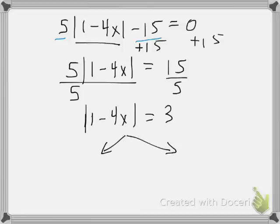It means we write two equations. And I need to solve 1 minus 4x equals 3, the one that I see pretty much. And the other one is 1 minus 4x equals negative 3.